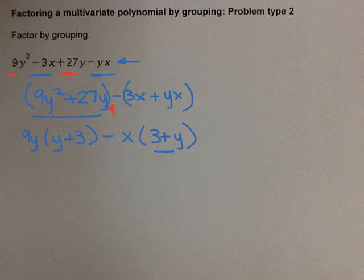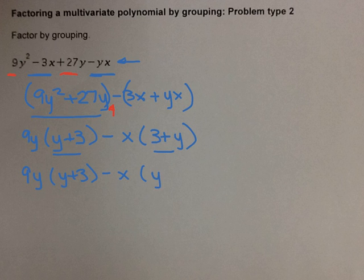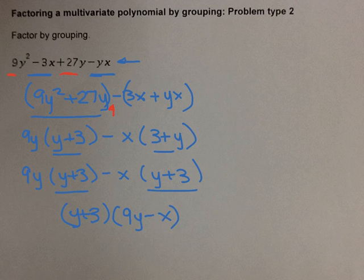If you notice, y plus 3 and 3 plus y are actually the same. I can rewrite that as 9y times (y plus 3) minus x times (y plus 3). Then I factor out (y plus 3), and I'm left with 9y minus x. And that's my final answer.